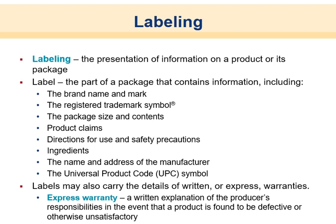An extension of packaging is labeling — the presentation of information on a product and its packaging. Labels contain the brand name and mark, trademark symbols (the ® symbol), package size and contents, product claims, directions for use and precautions, ingredients, name and address of the manufacturer, and a UPC symbol for scanning. Labels may also carry express warranties — written explanations of the producer's responsibilities if the product is found defective, which gives consumers peace of mind and indicates quality.